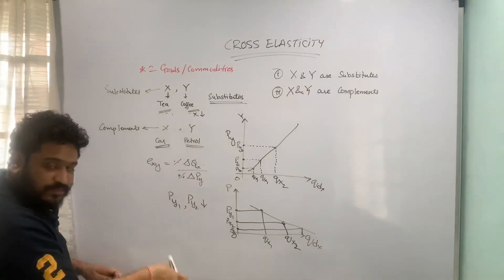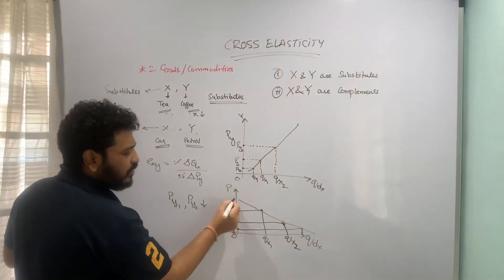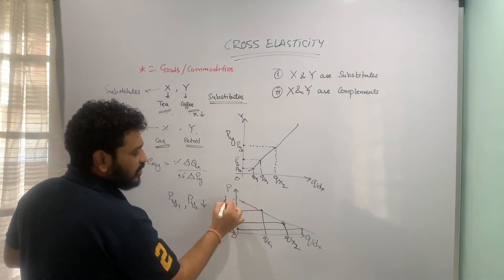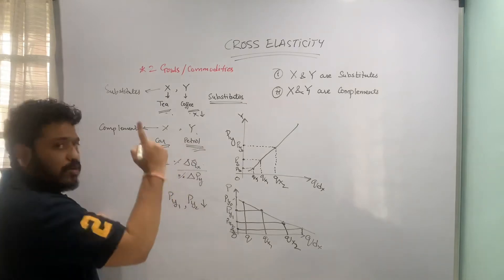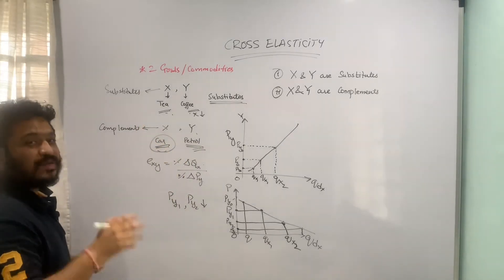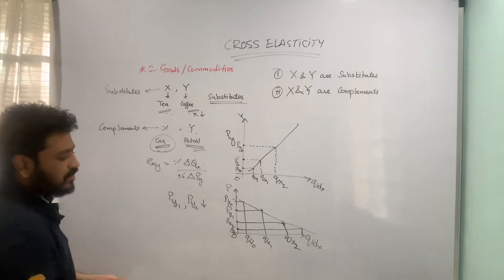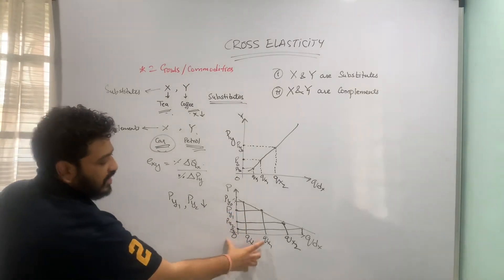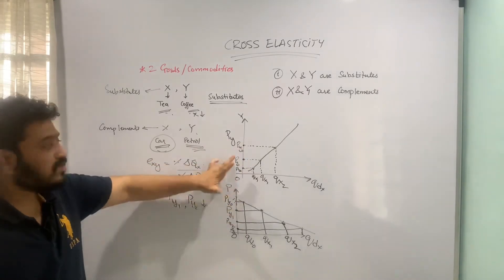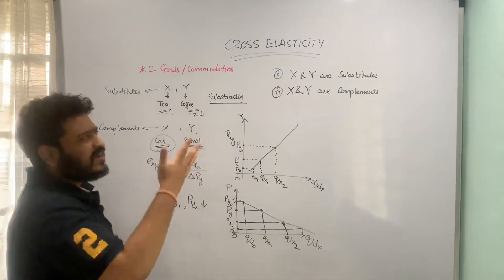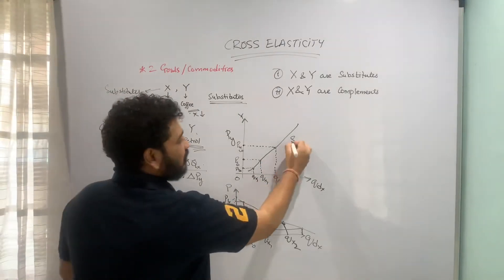The converse is also true: as the price of petrol goes up, people will consume less of cars running on petrol. So they will buy fewer cars. As the price falls, consumption of cars running on petrol increases. So these are the two cases — complements of each other and substitutes of each other. The third case is for unrelated goods, meaning good x and good y have no relationship between them.